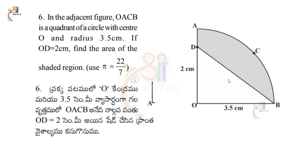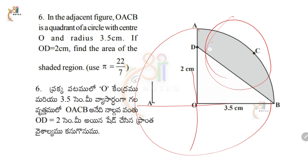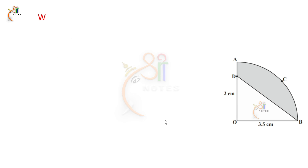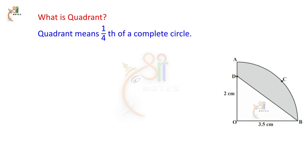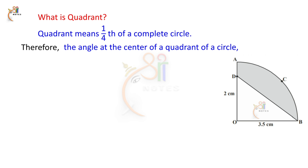A quadrant is one-fourth of a complete circle. One full circle is 360 degrees, so the angle at the center of a quadrant is 360 degrees divided by 4, which equals 90 degrees.